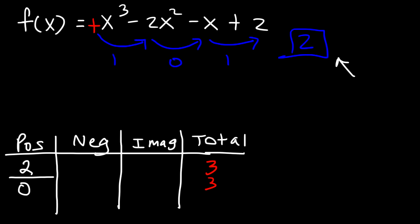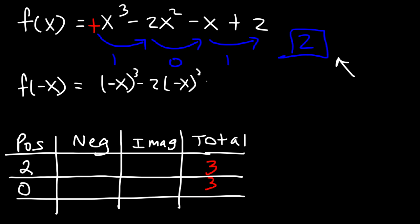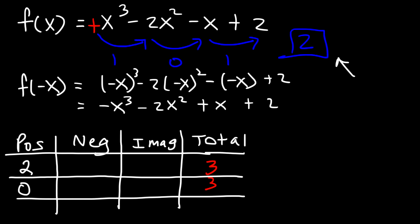Now, what about the possible number of negative real zeros? We need to write the function f(-x). So it's going to be (-x)³ - 2(-x)² - (-x) + 2, which simplifies to -x³ - 2x² + x + 2. Let's count the sign changes: negative to negative — no change; negative to positive — one change; positive to positive — no change. So there's only one sign change.